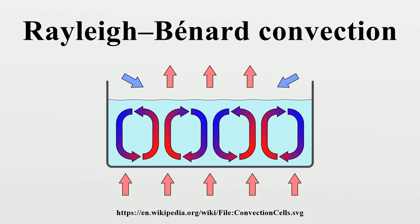Buoyancy, and hence gravity, is responsible for the appearance of convection cells. The initial movement is the upwelling of lesser density fluid from the heated bottom layer. This upwelling spontaneously organizes into a regular pattern of cells.